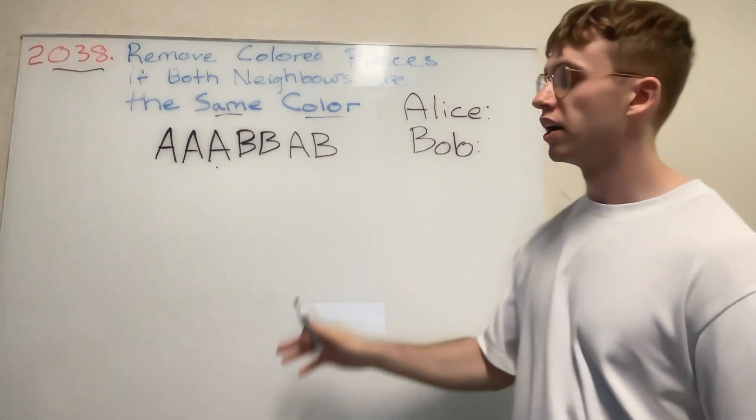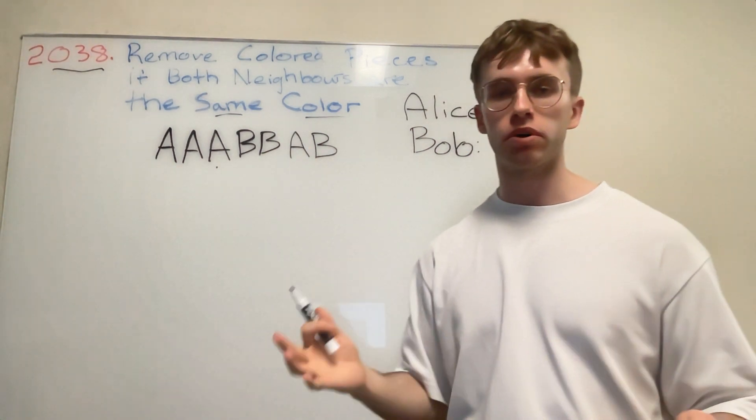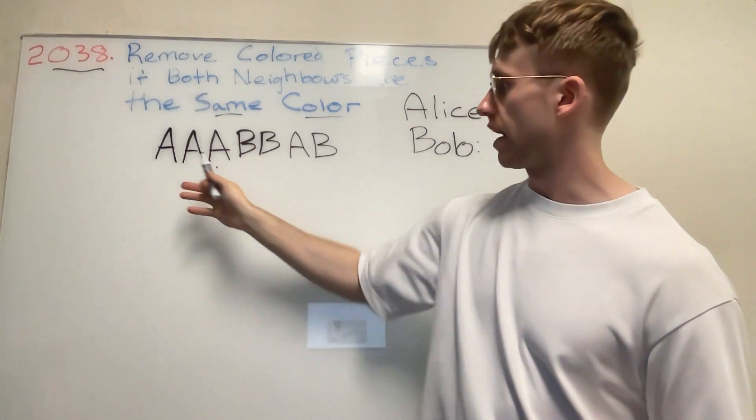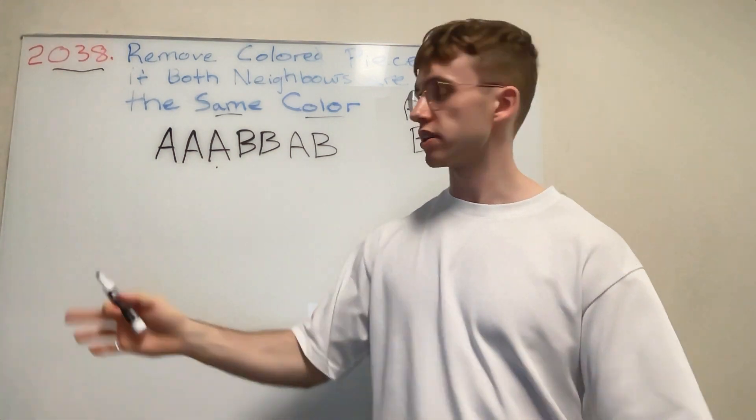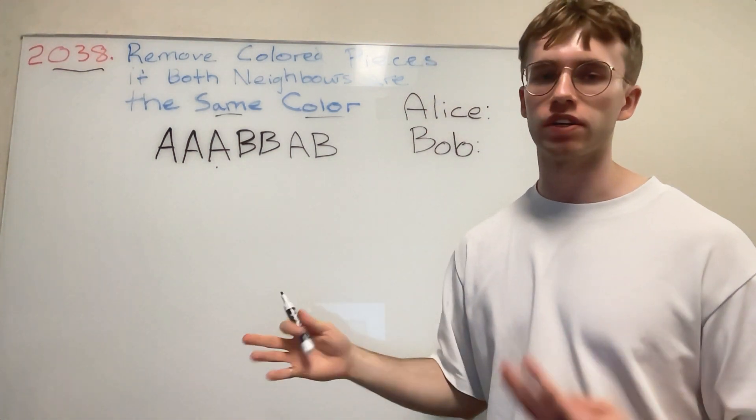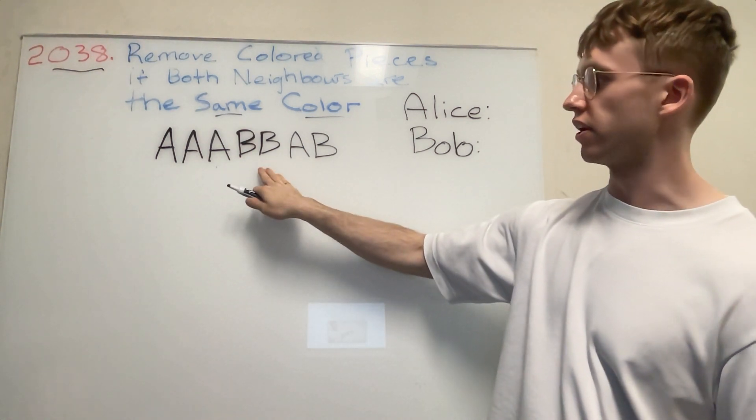So what do we want to do here? Essentially Alice and Bob are playing a game, and this game has an input called colors. It's represented in a binary nature where there's letter A's and letter B's.